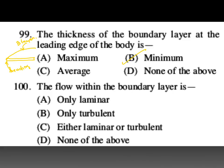The flow within the boundary layer: it is either laminar or turbulent. Up to a certain length it is laminar, then there is a transition zone, then turbulent. So the answer is either laminar or turbulent — C is your answer.